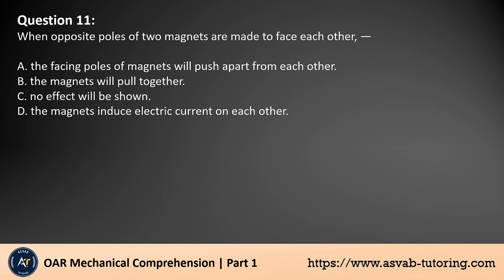Question 11. When opposite poles of two magnets are made to face each other: A. The facing poles of magnets will push apart from each other. B. The magnets will pull together. C. No effect will be shown. D. The magnets induce electric current on each other.